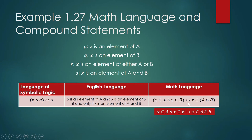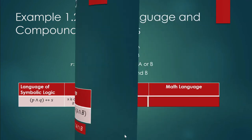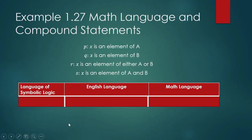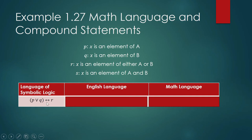We can improve this math sentence further, since in math language we prefer shorter expressions requiring fewer characters. We can remove the parentheses, and this shorter form is equivalent. Similarly, for (p ∨ q) ↔ r — 'p or q if and only if r.'